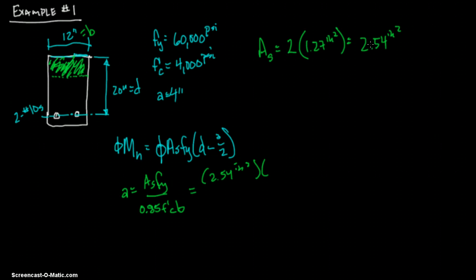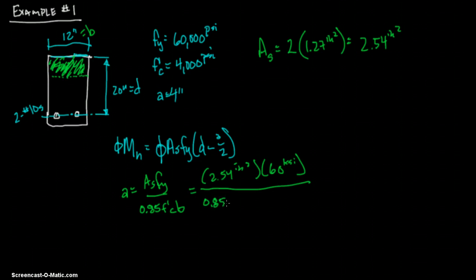And f_y, I would always, you could just go in here and plug it in 2 times 1.27. I would figure out A_s separately because you're going to need it again right here in the phi*M_n equation. So 60 ksi or 60,000 psi. I'm going to do stuff in ksi. I hope that doesn't bother you because that's what I'm used to.